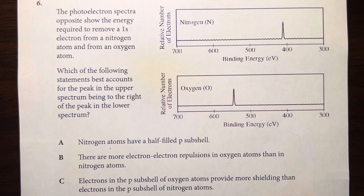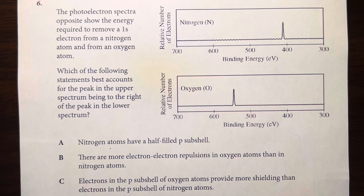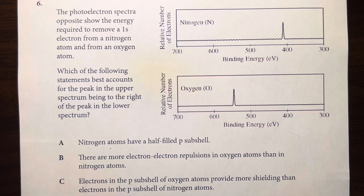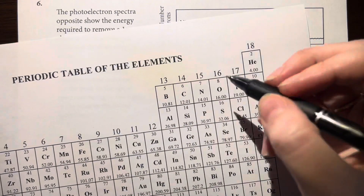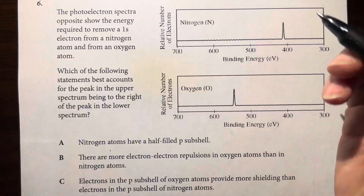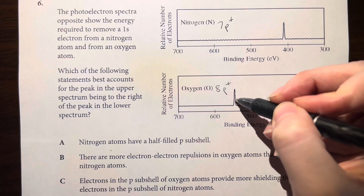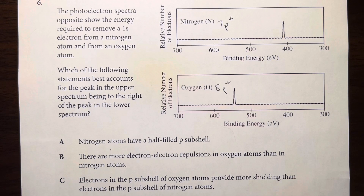The photoelectron spectra show the energy required to remove a 1s electron from a nitrogen atom and from an oxygen atom. Why is the peak in the upper spectrum to the right of the peak in the lower spectrum — i.e., why is it easier to remove the 1s electron from nitrogen than from oxygen? The key factor is the number of protons. Oxygen has 8 protons and nitrogen has 7, so oxygen pulls its 1s electrons closer to the nucleus, making them harder to remove.